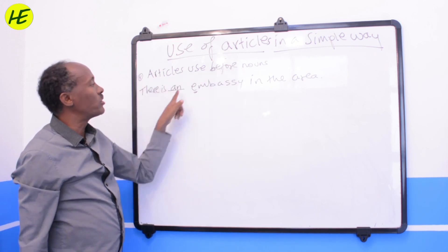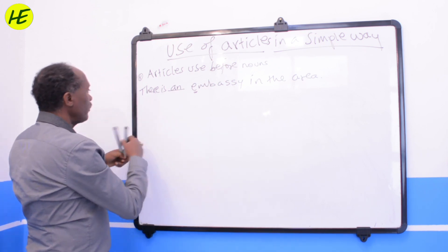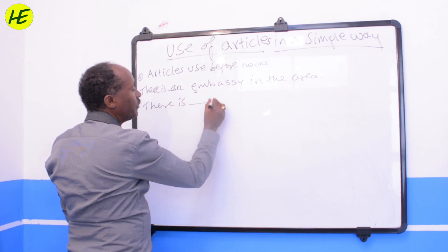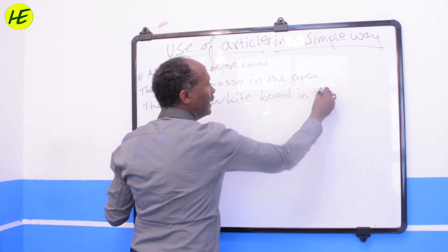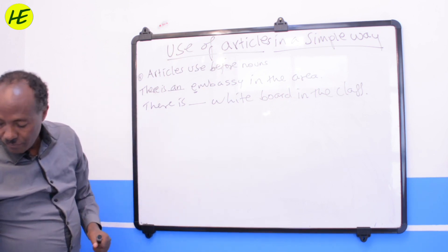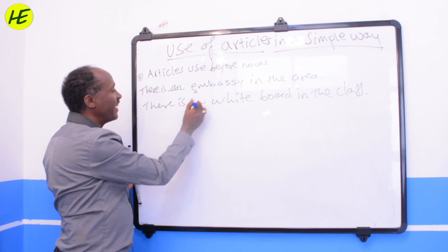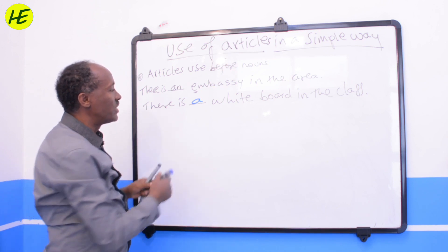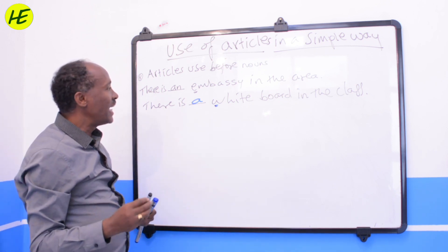Another example: 'There is a whiteboard in the class.' Here, 'whiteboard' starts with a consonant — 'W' — so we use 'a,' not 'an.' The article is used before the noun, so we say 'a whiteboard,' not simply 'whiteboard.'